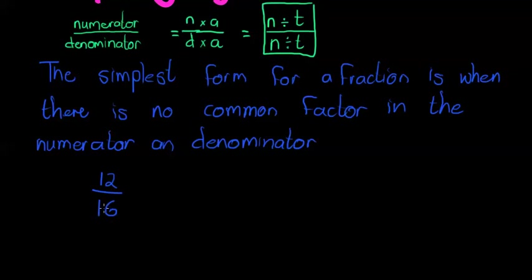Okay, so in the numerator and denominator, both can be divided with 4. So since both can be divided with 4, they have a common factor. This is therefore not the simplest form.